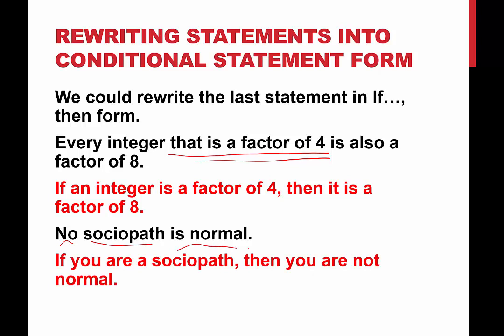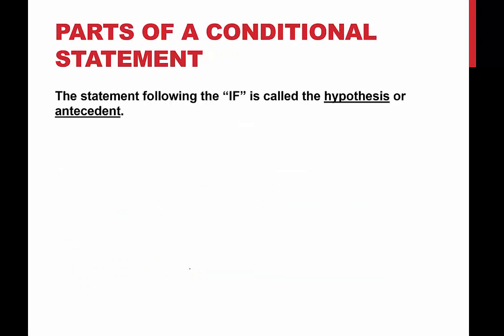You could also say 'if you are normal then you are not a sociopath' — that would actually be another correct conditional from the given statement. However, it would be wrong to say 'if you are not a sociopath then you are normal,' because there are other things that can make you not normal besides being a sociopath. So phrasing is important. There are two correct answers: if you are normal then you are not a sociopath, or if you are a sociopath then you are not normal.